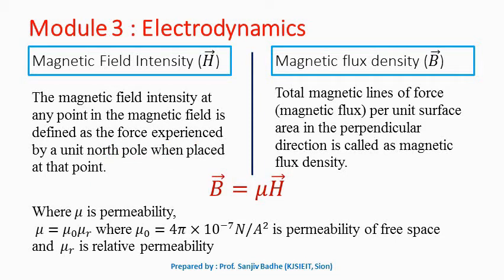We define electric flux density as the electric charge over the unit area of the spherical surface having its center at charge q. Now let us define magnetic flux density, which is denoted by B̄. Magnetic flux density is defined as total magnetic lines of force, or magnetic flux, per unit surface area in the perpendicular direction.